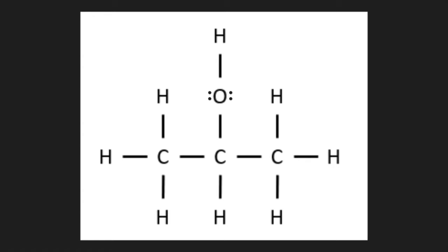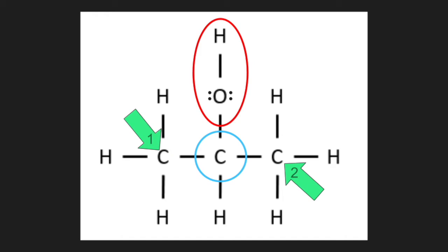So going back to our example from earlier, what class of alcohol is this? That's right, it's a secondary alcohol, because here's our hydroxyl group, and this carbon here is bound to two other carbons. But you must be wondering now, what is the name of this compound?